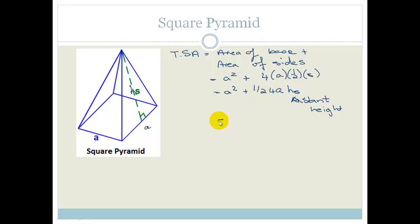So if we had to make this a little bit easier to read it would be A squared plus a half of four is two. Two times A Hs.